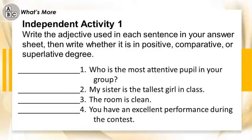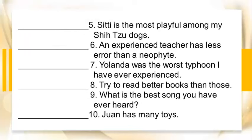Independent Activity 1: Write the adjective used in each sentence in your answer sheet, then write whether it is in positive, comparative, or superlative degree. 1. Who is the most attentive pupil in your group? 2. My sister is the tallest girl in class. 3. The room is clean. 4. You have an excellent performance during the contest. 5. City is the most playful among my sheets of dogs. 6. An experienced teacher has less error than a neophyte. 7. Yolanda was the worst typhoon I have ever experienced. 8. Try to read better books than those. 9. What is the best song you have ever heard? 10. One has many toys.